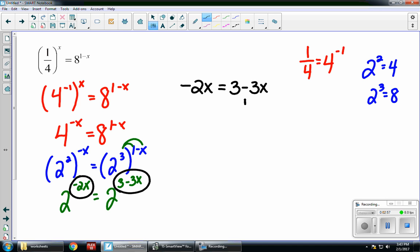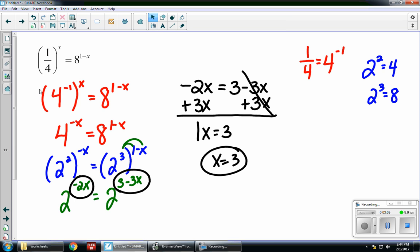I'm going to solve for x by adding 3x to both sides. So we get 1x equals 3 or just x equals 3 as your answer. And that's how you solve equations with common base when there's a fraction.